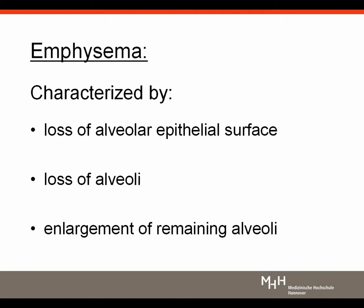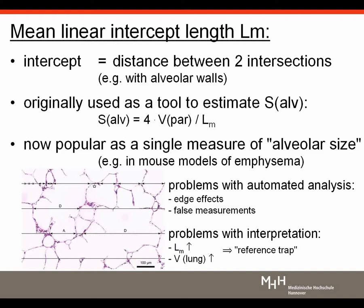What are the structural characteristics of lung emphysema quantifiable by stereology? According to the definition, it is basically a loss of alveolar epithelial surface, always accompanied by a loss of alveoli and an enlargement of remaining alveoli — these are the major parameters to focus on. However, common practice relies on a parameter called mean linear intercept length (Lm), also called mean chord length. I would consider mean linear intercept length probably as the black sheep of lung morphometry because the interpretation is extremely tricky.